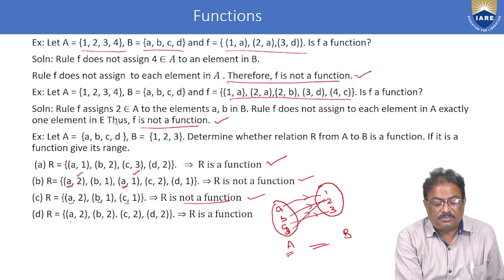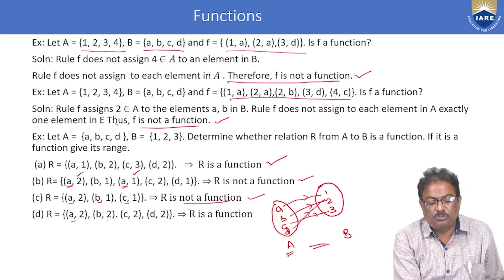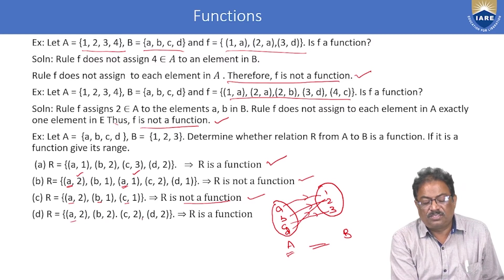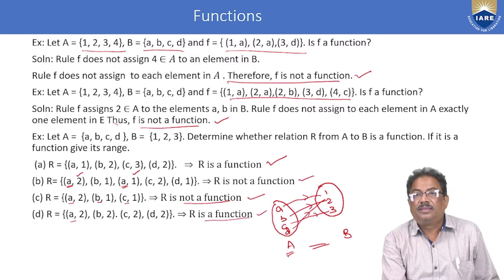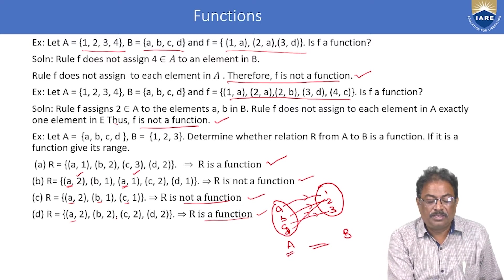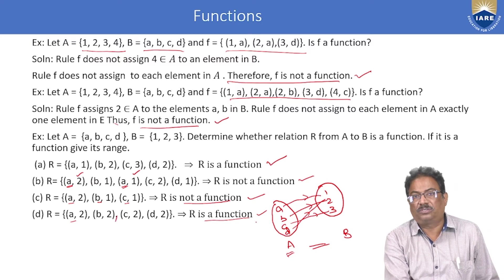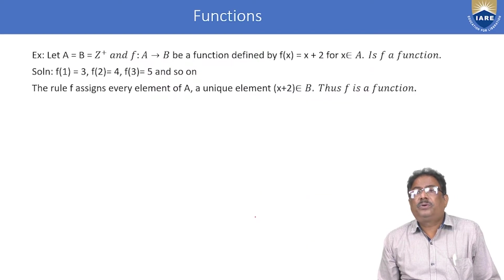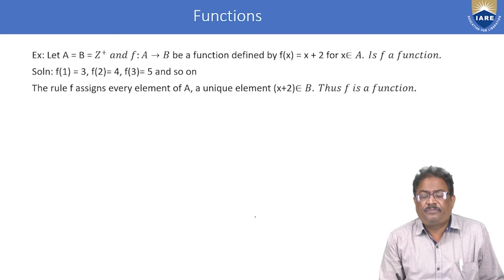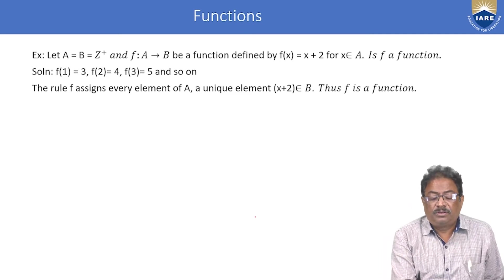In the fourth mapping, A maps to 2, B maps to 2, C maps to 2, and D maps to 2 — every element of A has an image, so this is a function. This is how we verify whether a given mapping is a function or not.